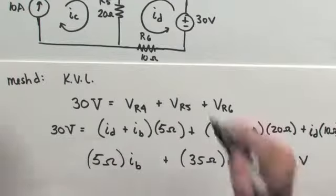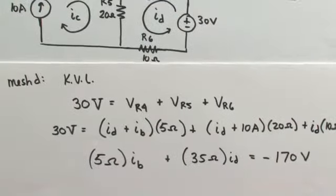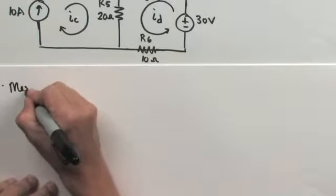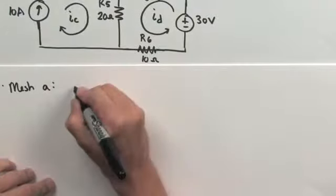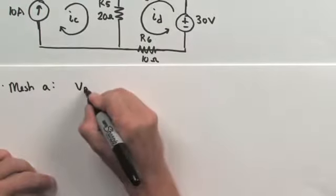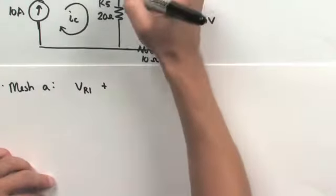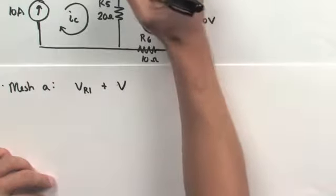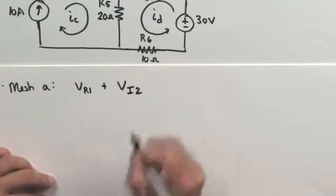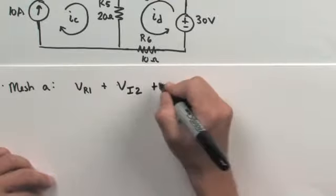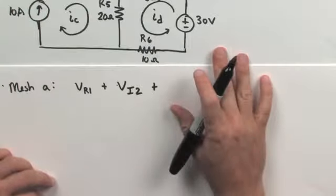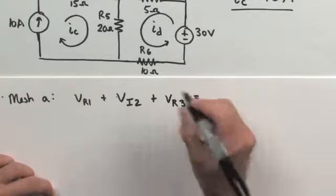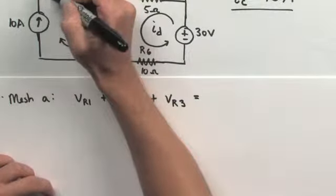Next we tackle mesh A and mesh B. For mesh A, invoking Kirchhoff's voltage law: the potential across R1, plus the unknown potential developed across this current supply (which we'll call V sub I2), plus the potential developed across R3, must all equal the 50 volt supply.